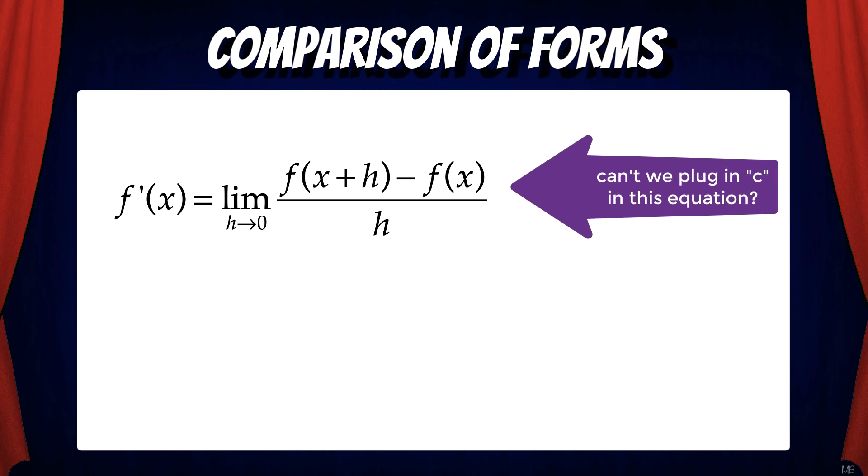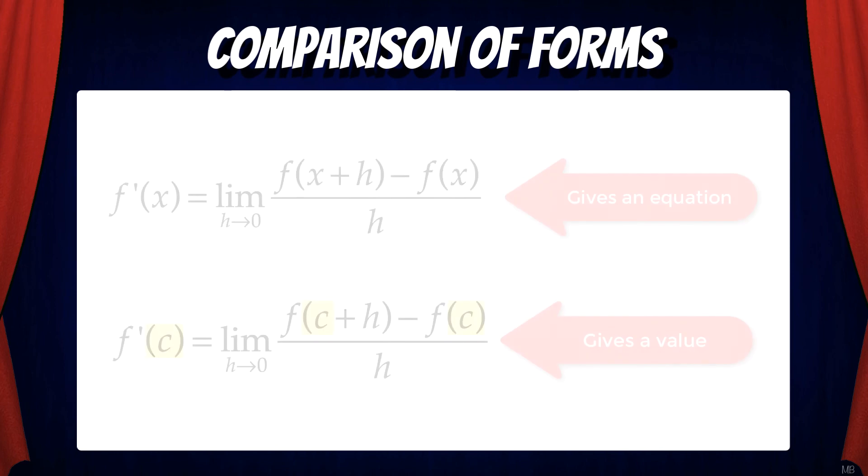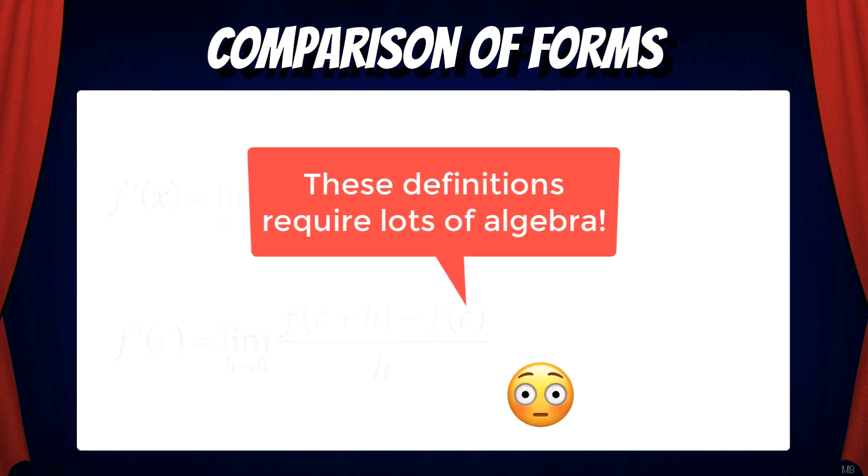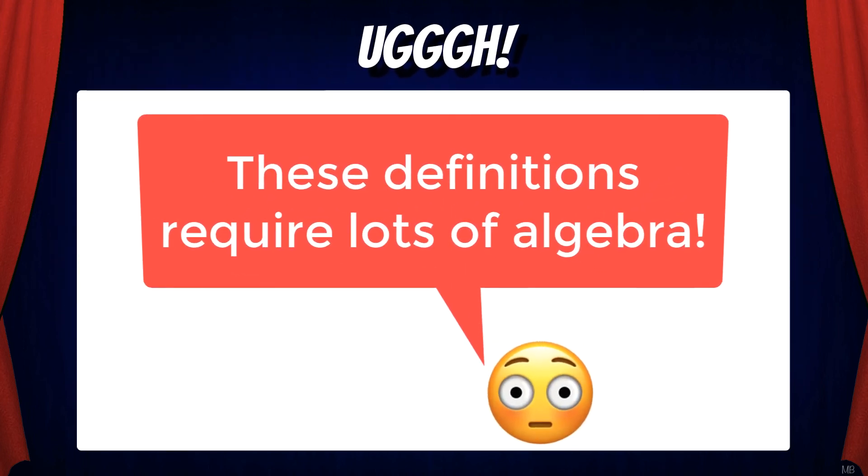And won't that give us a value? Yes, of course, you can do that as well. These forms of the formal definition of a derivative are just different ways of looking at the same idea. But you might have noticed that both methods require a lot of algebra. And this is very slow and can get very messy. There's got to be a faster way. And there is.